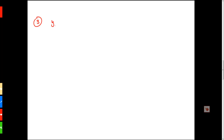Third, assume that y is a scalar standard normal distribution — that is, mean 0 and variance 1. Then it holds that y squared will follow a chi-square distribution with 1 degree of freedom. We call this S3.